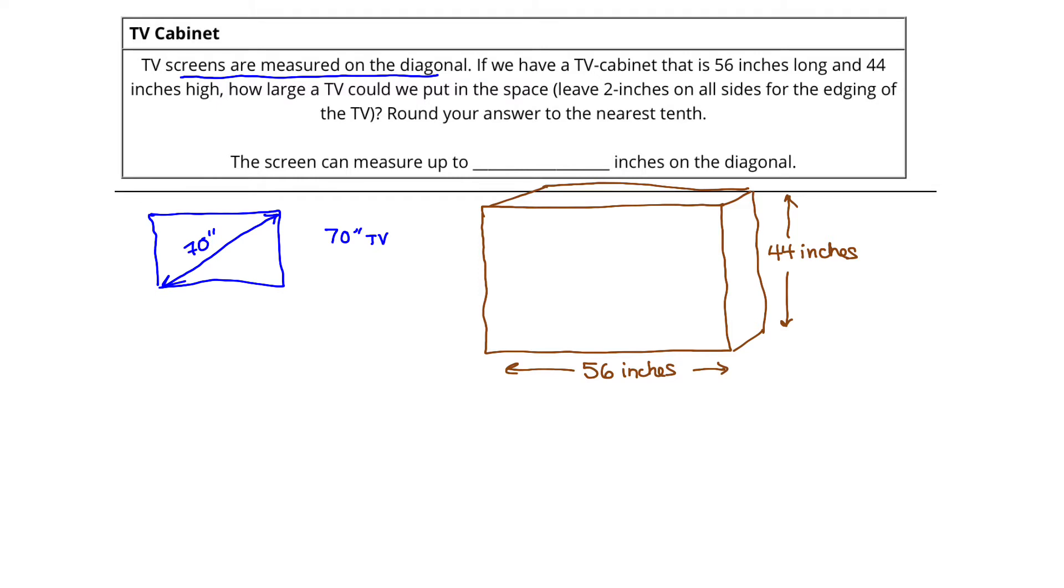Now we're told that we want to put a TV inside this such that the screen itself leaves two inches on all sides for the edging. So that means we're going to take a TV and put it inside. That's one of those old TVs that have that big thing in the back of it. So we have this TV that's going inside this cabinet. And what do we know about this TV? We don't know how big it is. In fact, we're trying to work on getting that. But we do know that we have to leave two inches all around it.